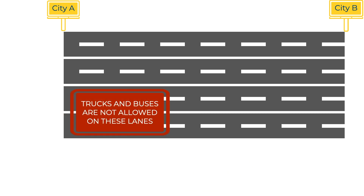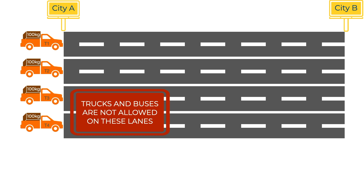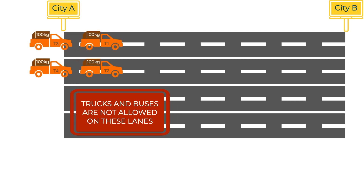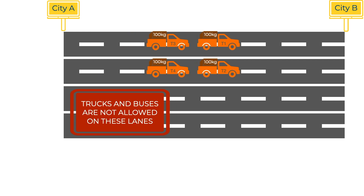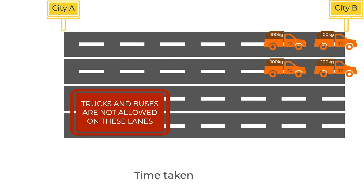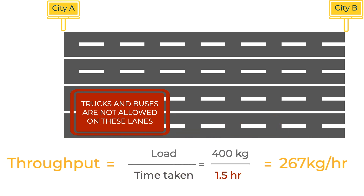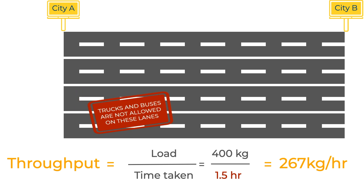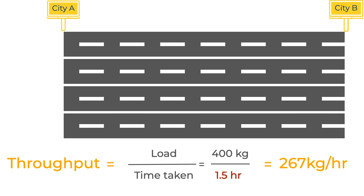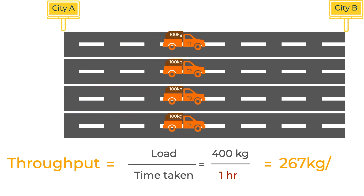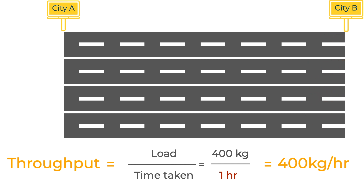However, if two lanes are reserved for smaller vehicles, only trucks T3 and T4 can use those two lanes. Due to resistance, all four trucks might not reach within an hour — they might take 1.5 hours. In that case, throughput would be low. But if we remove all constraints and four trucks can travel on two lanes and transport 400 kg from A to B within an hour, we say that 400 kg per hour is the throughput.